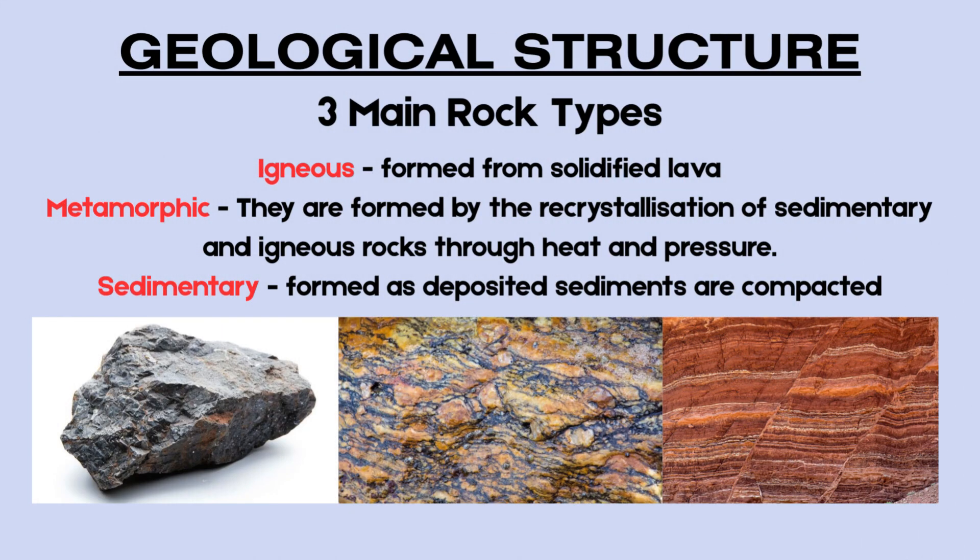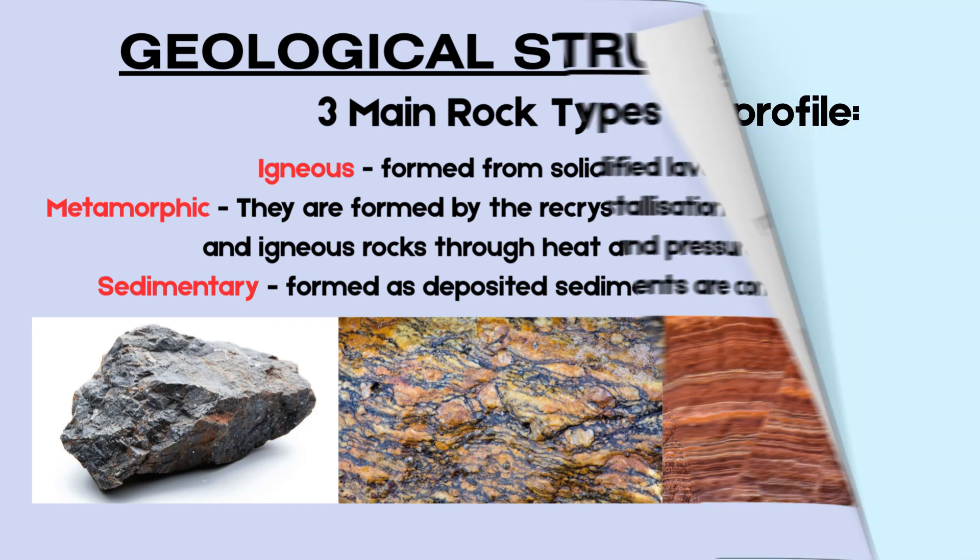There are three main rock types to know, so you can identify potential causes of differential erosion on coastlines. Igneous rocks are formed from solidified lava. Metamorphic rocks are formed by the recrystallization of sedimentary and igneous rocks through heat and pressure. And finally, sedimentary rocks are formed as deposited sediments are compacted.